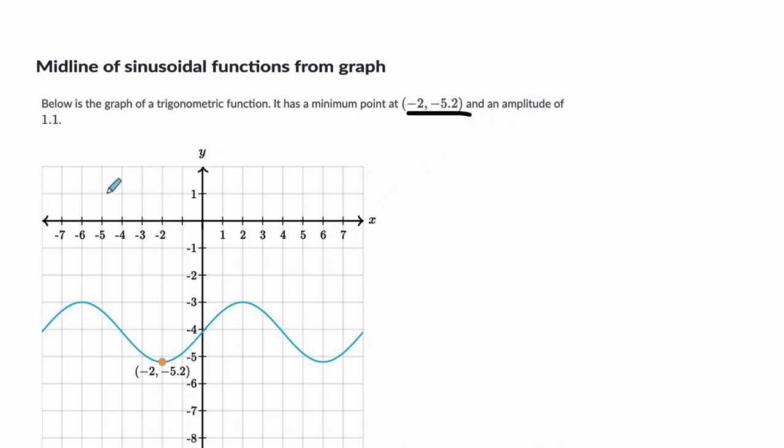And the amplitude is 1.1. So in the first example, we started at a maximum point and subtracted the amplitude to find the midline. But now we're at a minimum point, so we add the amplitude to work up towards the midline. If we take negative 5.2 and add the amplitude, we get negative 4.1. That's the equation for the midline. To find a maximum point, you'd add another 1.1 above that.